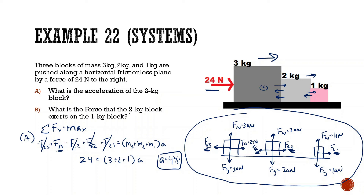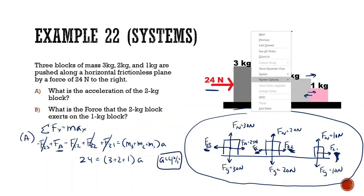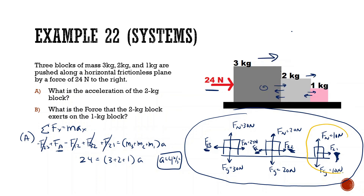Now: what is the force that the 2 kg block exerts on the 1 kg block? Looking only at the 1 kg free body diagram, the only x force is F2-on-1, equal to mass of 1 kg times acceleration of 4 m/s² — giving 4 newtons.